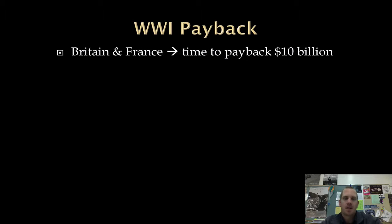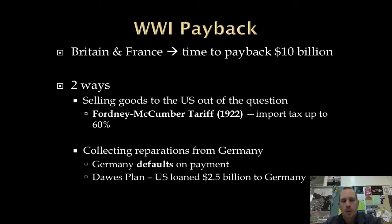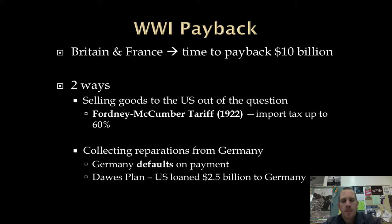Regarding payback for World War I: Britain and France owed us $10 billion, but they didn't have it. Selling goods to the United States was basically out of the question — the Fordney-McCumber tariff of 1922, a high import tariff, meant these countries wouldn't import as much. So we tried to collect reparations from Germany. However, Germany defaulted on their payments to Britain and France. The Dawes Plan loaned $2.5 billion to Germany; Germany would pay it to Britain and France, who would then pay it back to us. Germany used the money to rebuild its infrastructure and business before paying back Britain and France.